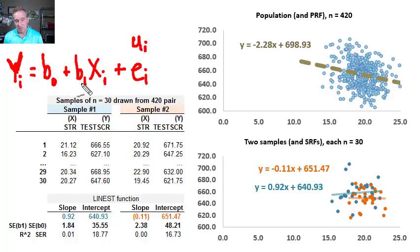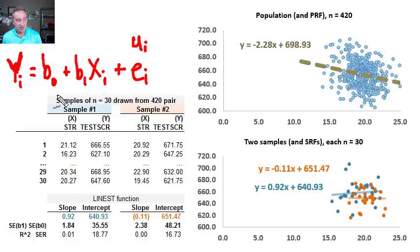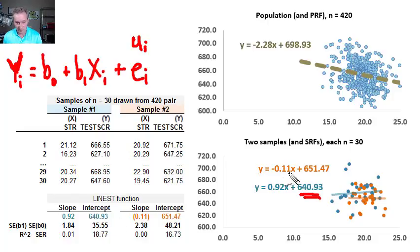Each of these coefficients — the intercept, the slope, and the residual — are estimators that differ for each sample and estimate the population parameters. The key idea is that in the sample regression function, these coefficients themselves are random variables. You can see this when I enlist Excel: in my first sample, the intercept is 640; in my second sample, it's 651. These estimators of the unknown population parameters are random variables.